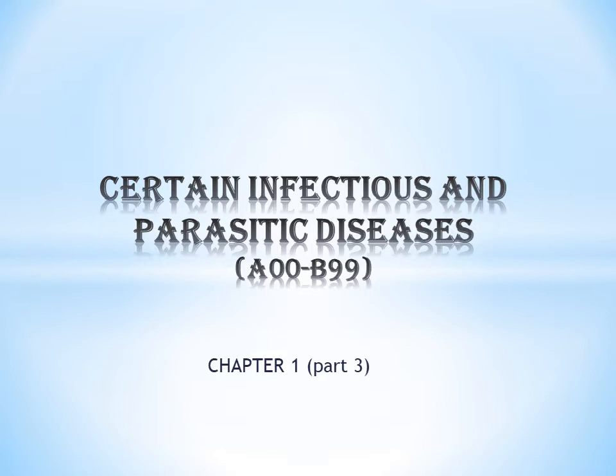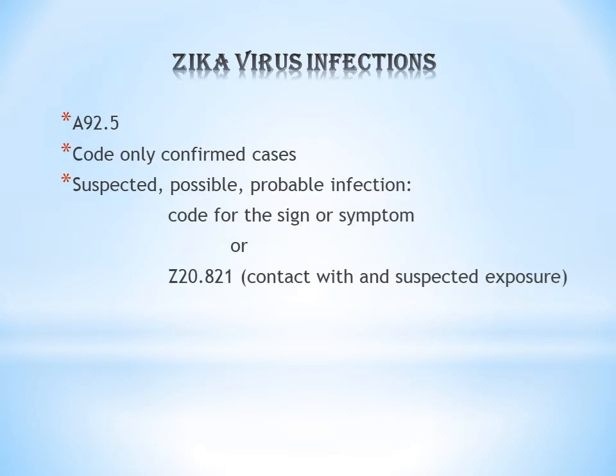The first condition is Zika Virus Infection. The code for Zika Virus Infection is A92.5. The first point is: code only confirmed cases — that is, when the doctor has confirmed the patient has Zika Virus Infection. If the doctor has documented suspected, possible, or probable Zika Virus Infection, we do not use A92.5.